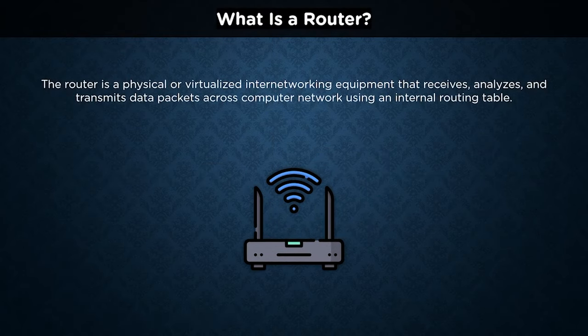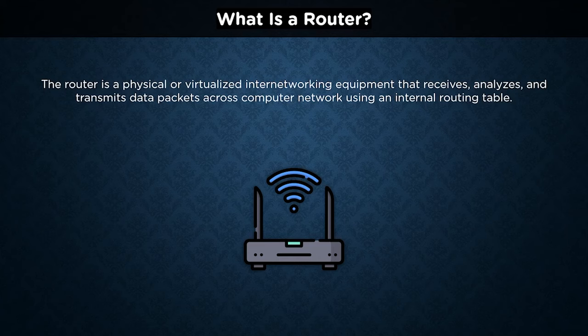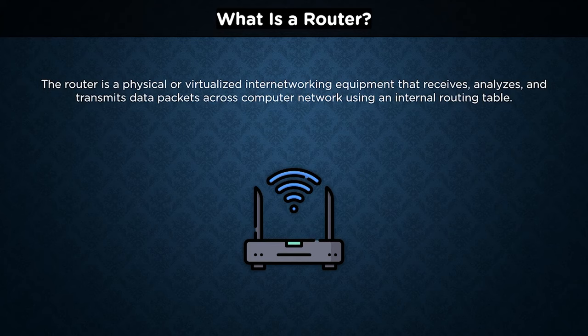A router is a physical or virtualized internetworking device that receives, analyzes, and transmits data packets across computer networks. It checks a data packet's destination IP address and utilizes headers and forwarding tables to determine the best path to transport the packet. Consider the router to be an air traffic controller, and data packets as airplanes flying to various airports. Each packet has a unique destination and must be steered there as efficiently as possible, just as an air traffic controller ensures flights arrive without disruption.